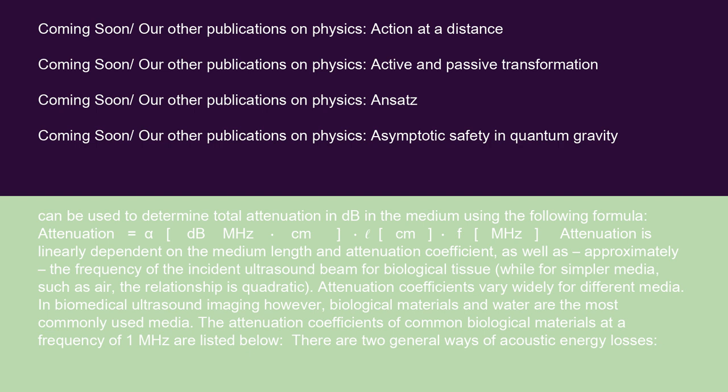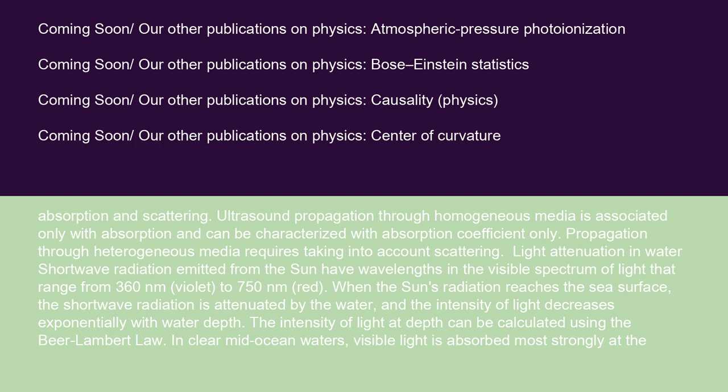Attenuation coefficients vary widely for different media. In biomedical ultrasound imaging, biological materials and water are the most commonly used media. The attenuation coefficients of common biological materials at a frequency of 1 MHz are listed below. There are two general ways of acoustic energy loss: absorption and scattering. Ultrasound propagation through homogeneous media is associated only with absorption, while propagation through heterogeneous media requires taking scattering into account.